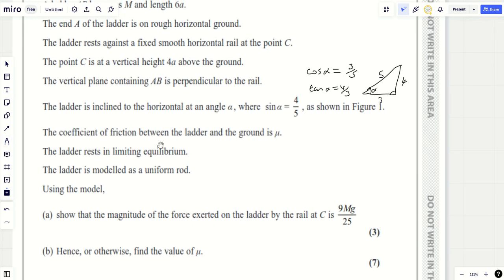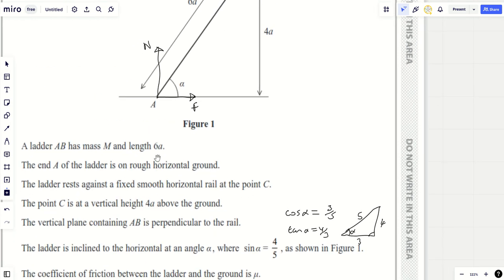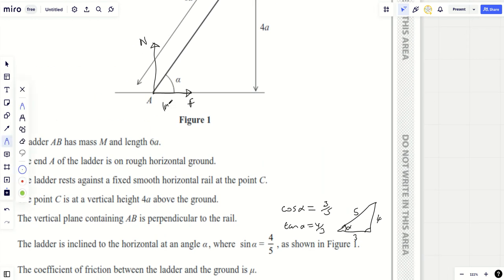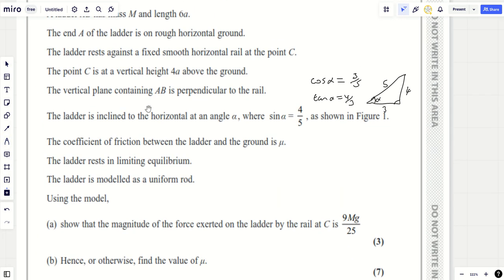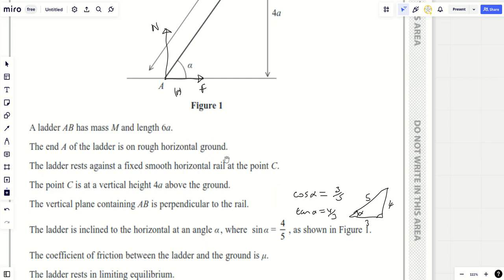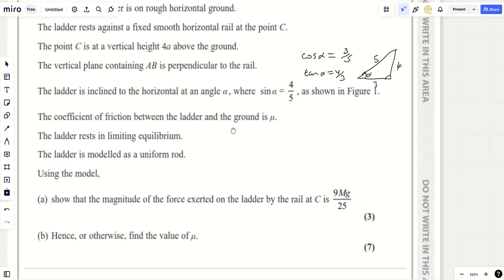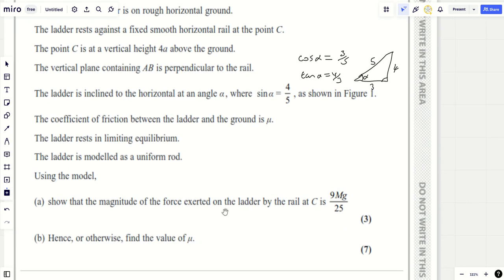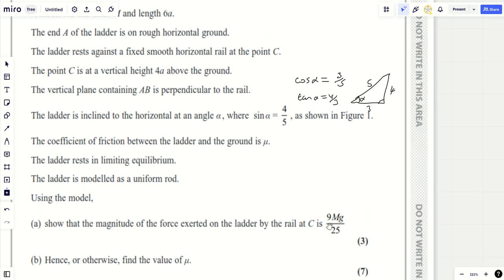Coefficient of friction between the ladder and the ground is mu. Let's write down mu underneath here. The ladder's in limiting equilibrium, so forces are balanced but it's about to slip and friction is at a maximum. The ladder is modeled as a uniform rod. The magnitude of the force exerted on the ladder by the rail at C is 9mg over 25. This is worth three marks, and then hence or otherwise find the value of mu, which is worth seven.